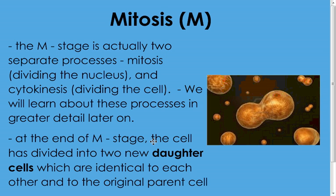Mitosis and cytokinesis are two separate stages but they happen at the same time, which is why they're grouped together in the M stage. At the end of the M stage we will have two identical daughter cells. Daughter cells are the new cells produced by cell division — they'll be identical to each other both genetically and in size and shape, and also identical to their original parent cell. If there are differences, something has gone wrong. The whole goal of mitosis is to produce two new identical daughter cells.